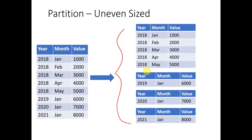On the other hand, let us assume there is a file containing eight records where five records are for year 2018 and one record each for 2019, 2020, and 2021. As a result, if we create partitions based on year key, it would create unevenly distributed partitions — five records for one partition for 2018 and one record for other years. This is going to produce uneven sized partitions and in real-time projects with millions or billions of records, it is going to hit the performance heavily.